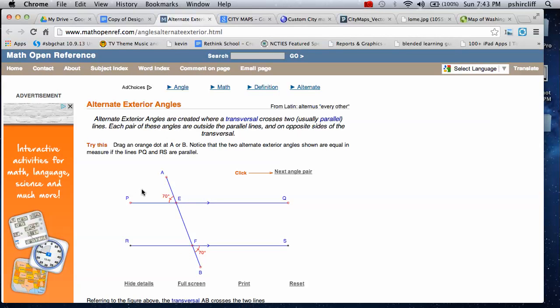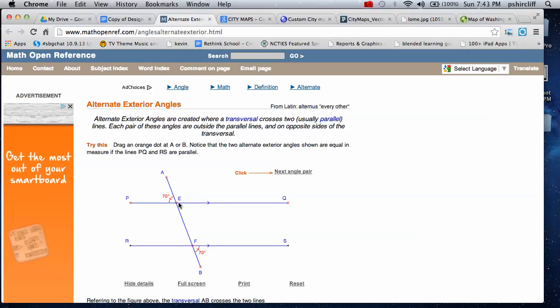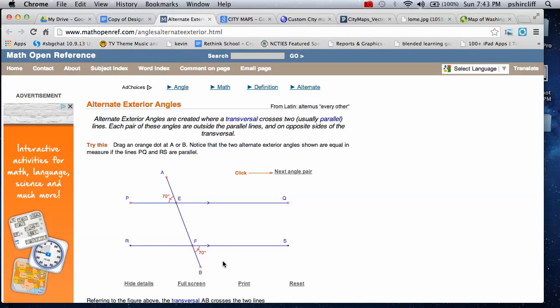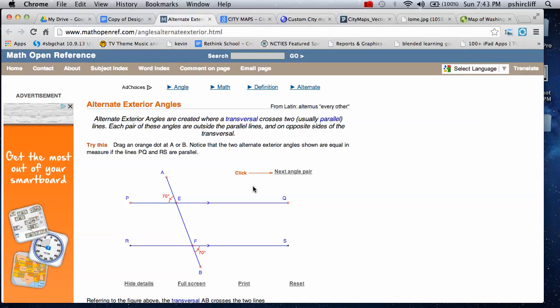Opposite sides of the transversal. They're on the exterior because they're on the outside of our parallel set, and alternate because they're on the left and the right side - the northwest and the southeast corner of the intersection.